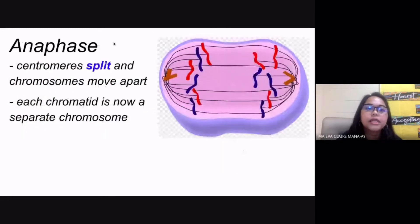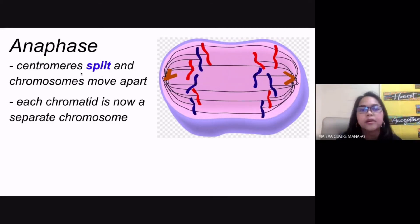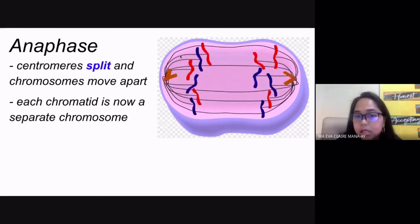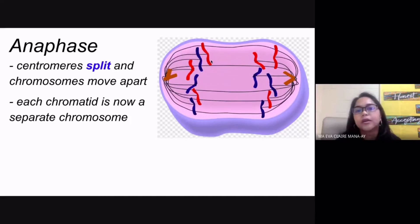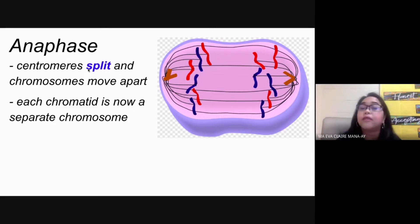The third stage is anaphase. The most important event here is the splitting of the centromeres. This happens because the spindle fibers shorten, allowing the centromeres to split. Each chromatid now separates as an individual chromosome. The most important event in anaphase is the splitting of centromeres caused by the shortening of spindle fibers.